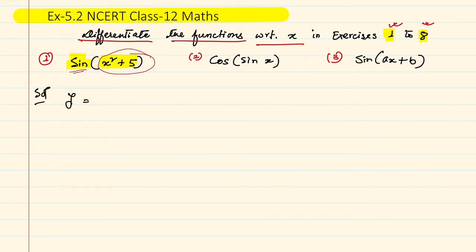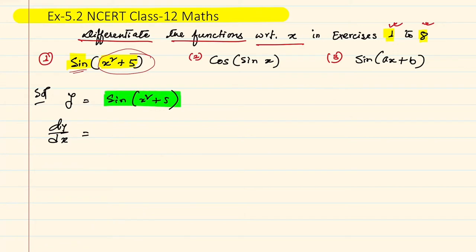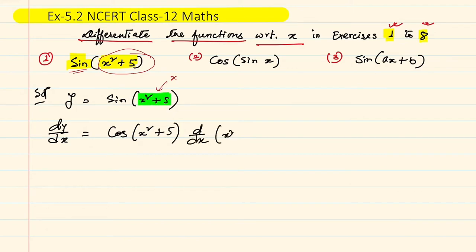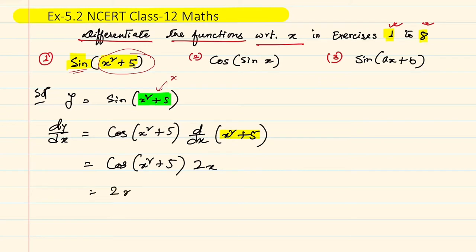Our given function: let y = sin(x² + 5). For dy/dx, first differentiate considering this whole thing as x. The derivative of sin x is cos x. So instead of x, there is x² + 5, and then you differentiate this inner function. Derivative of x² + 5 is 2x, and derivative of 5 (constant) is 0. So the answer is 2x·cos(x² + 5).